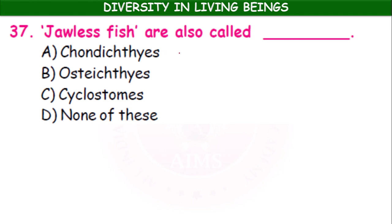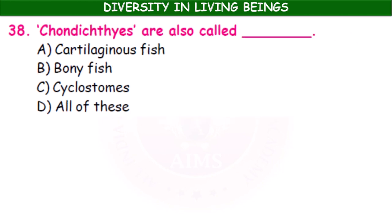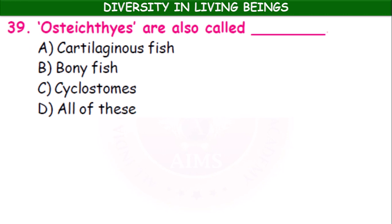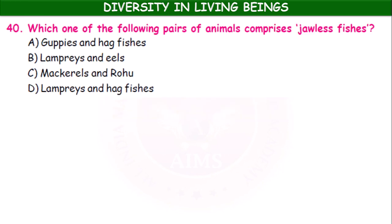Chondrichthyes are cartilaginous fishes; osteichthyes are bony fishes; cyclostomes are jawless fishes. Which of the following pairs of animals comprises jawless fishes — guppies and hagfishes; lampreys and eels; mackerels and rohu; or lampreys and hagfishes? Lampreys and hagfishes are the cyclostomes — the jawless fishes.